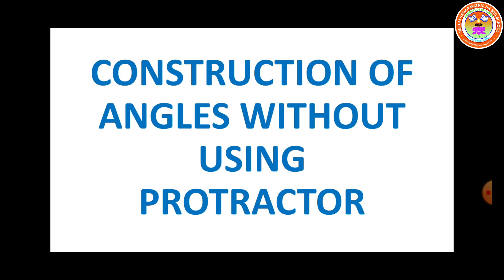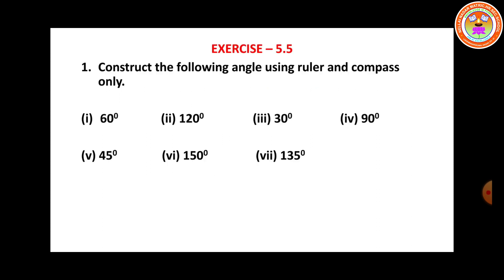Construction of angles without using protractor. Now move on to Exercise 5.5: Construct the following angles using ruler and compass only — 60 degrees, 120 degrees, 30 degrees, 90 degrees, 45 degrees, 150 degrees, 135 degrees. 150 and 135 degrees are homework for you.